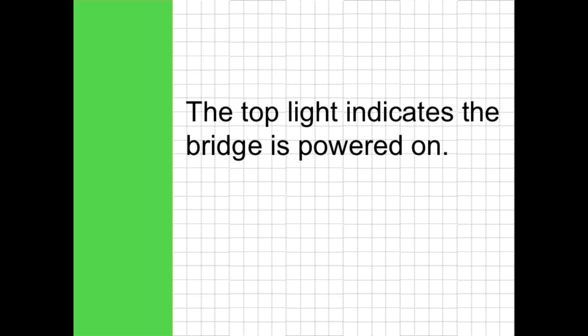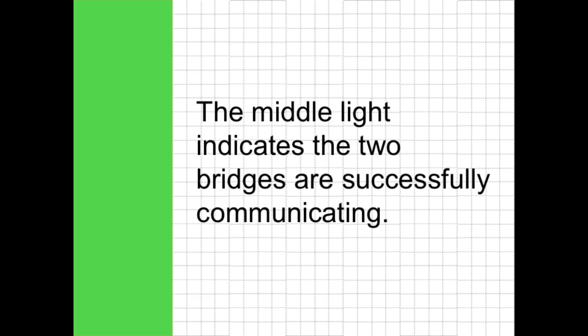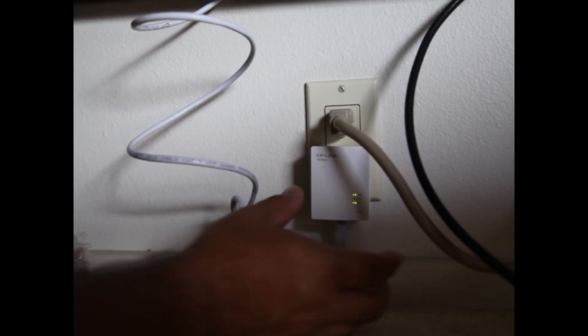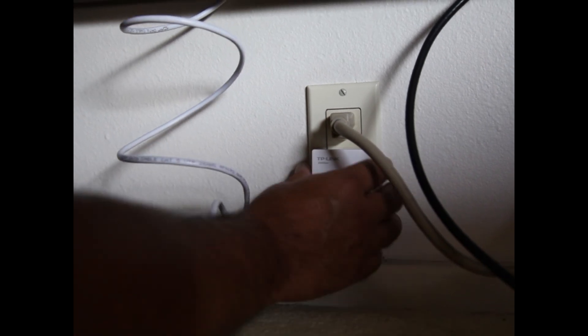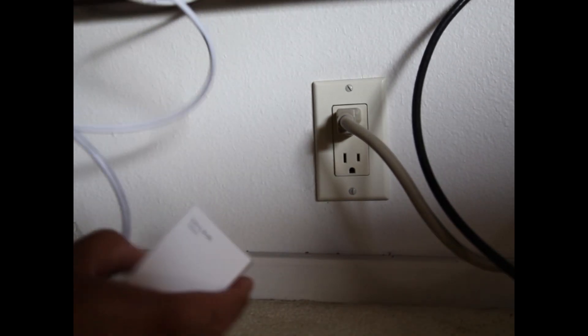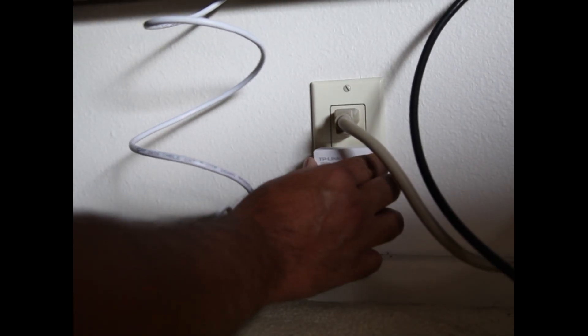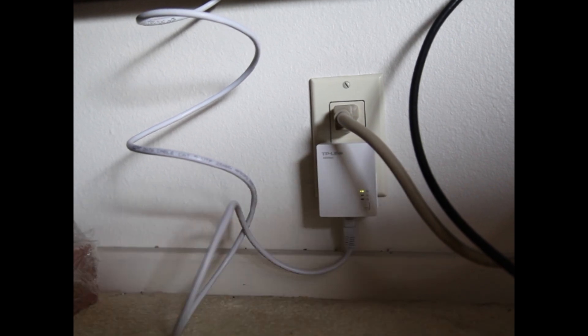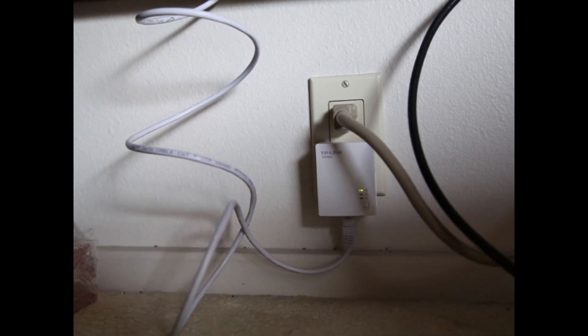When lit, the top light indicates the bridge is powered on. When lit or blinking, the middle light means the two bridges are successfully communicating with each other. If the middle light is out, simply unplug the bridge from the wall outlet for a few seconds, then plug it directly back in to power cycle the device.